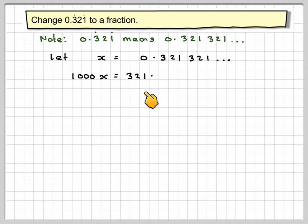So, that gives me 321.321.321. And now you do 1,000x minus x. So, it gives me 321 minus 0, which is 321. 321 minus 321 is nothing. 321 minus 321 is nothing.